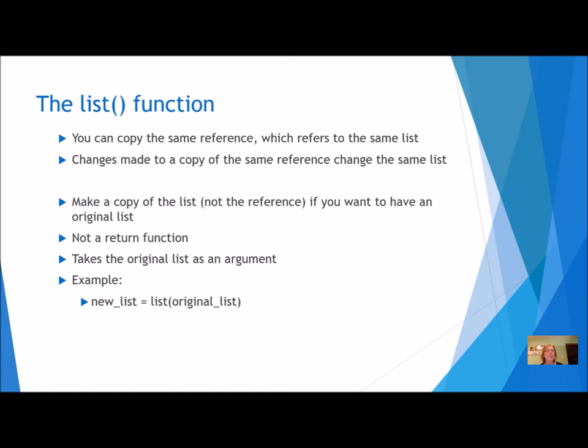The list function does take an argument, which is the original list. Here's an example of what the code would look like. List is the function, the original list is passed in as the argument, and it's a return function, so it has to be assigned to something - it's going to be assigned to a new list.